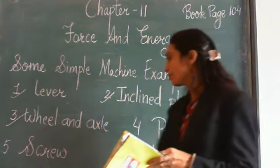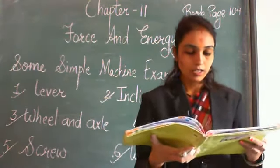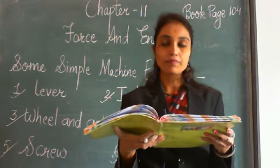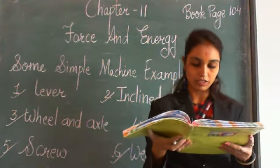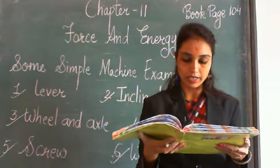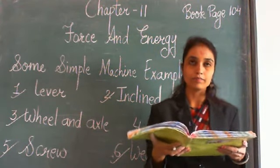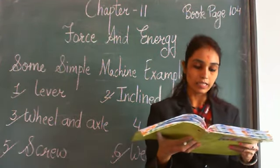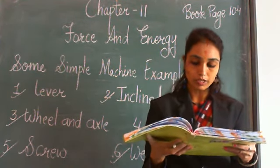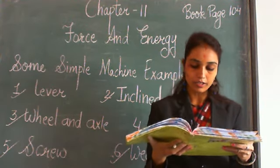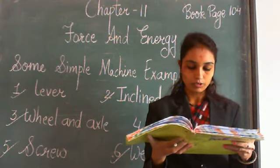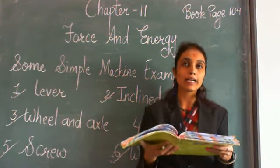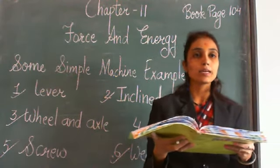Next is the screw. A screw is an inclined plane wrapped around a cylinder in the form of a spiral. It has a winding edge with threads. Screws are commonly used to hold things together and have a better grip moving through a longer distance, so screws are preferred over nails. Screw jack and the lid of gem bottles are examples of a screw.